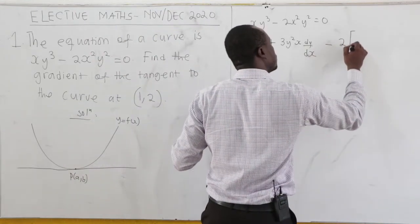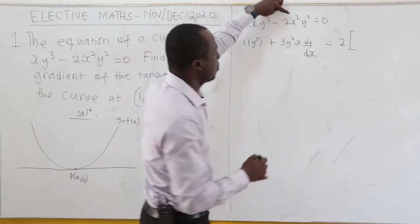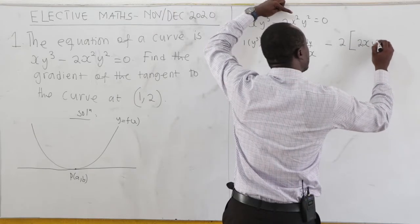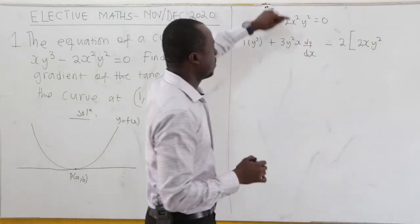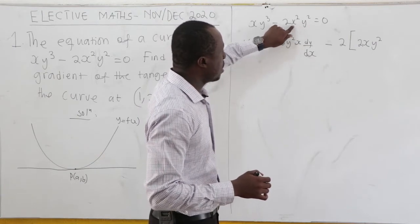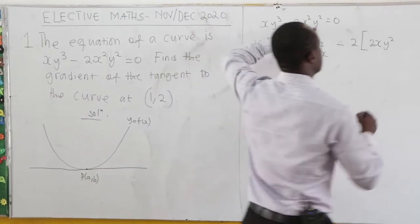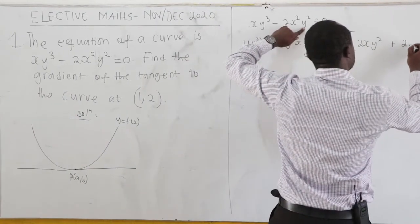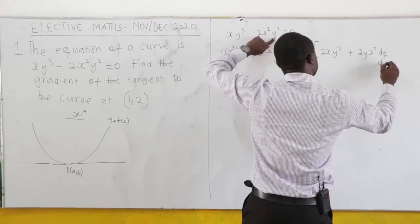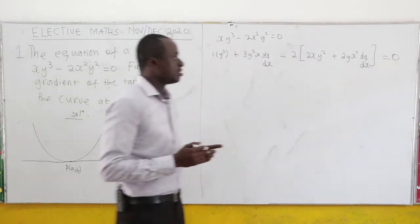Minus 2 — it's a constant. Now differentiate x square: when you differentiate x square we get 2x, times y square. Then we keep x square and differentiate y square, so we have plus 2y, giving x square dy/dx. And this is equal to 0.